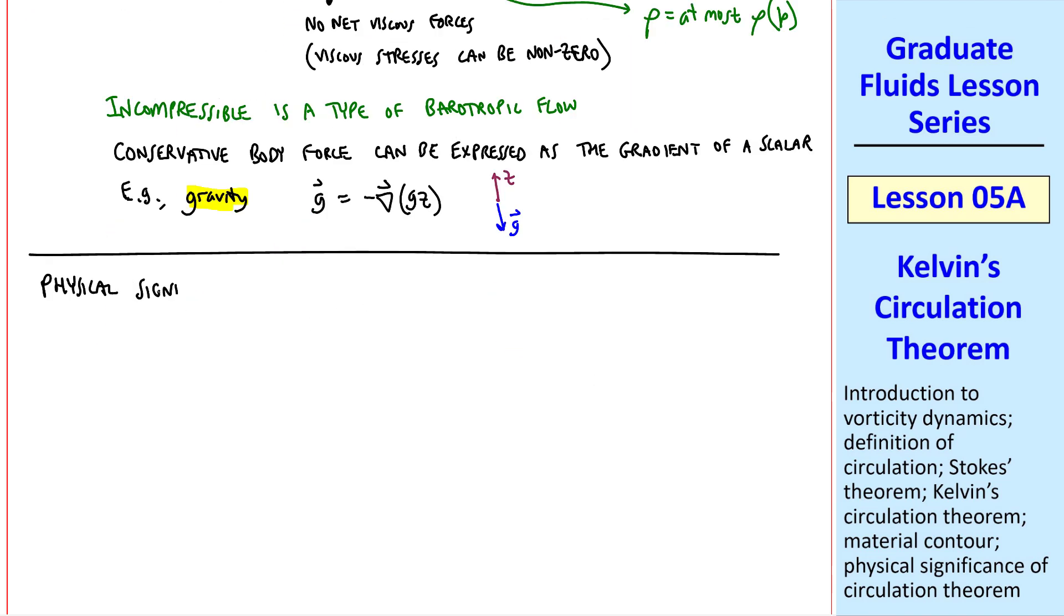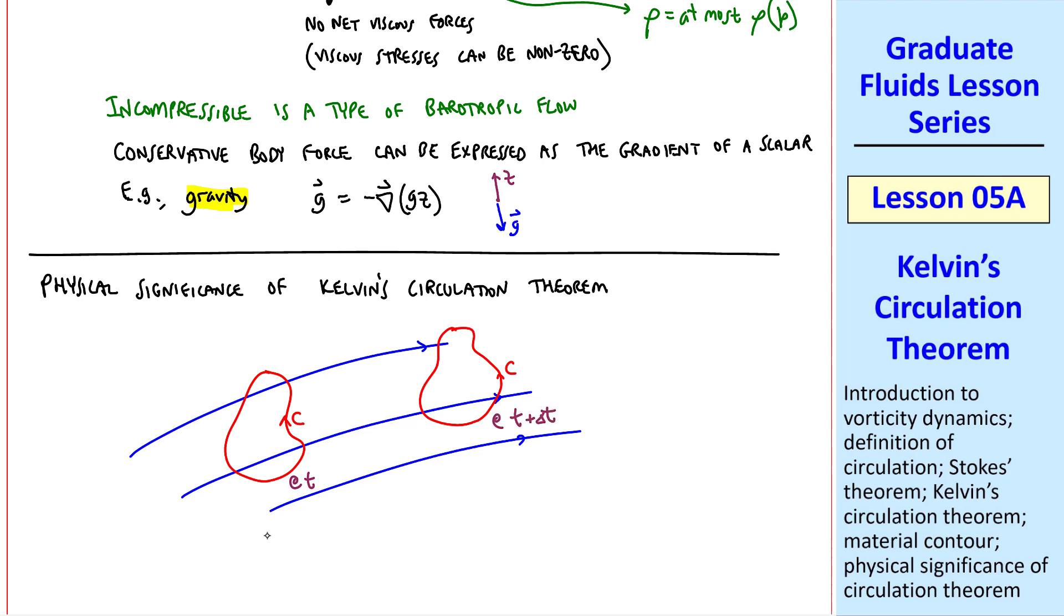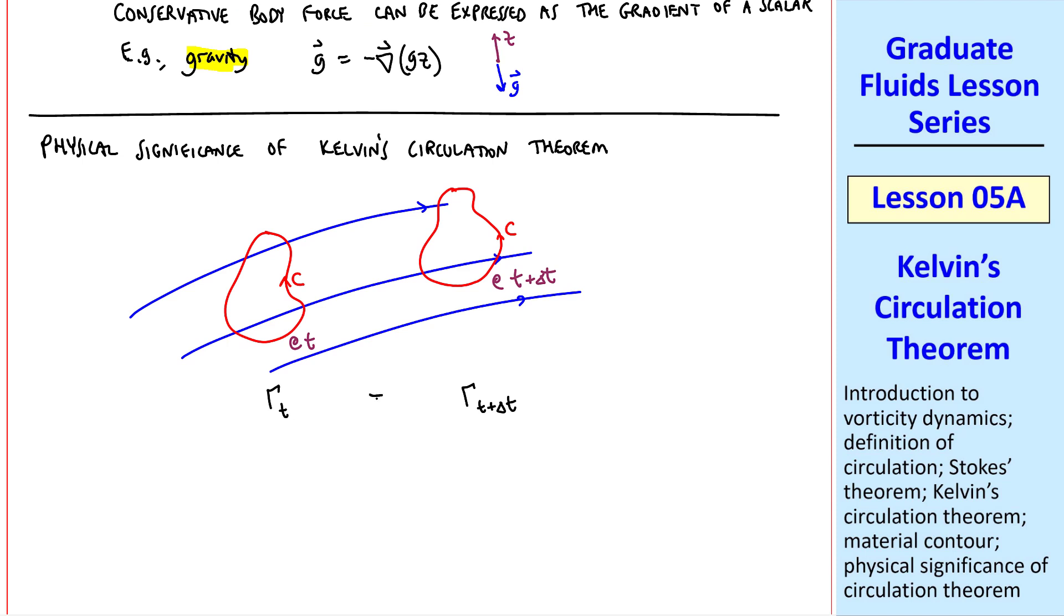Now let's talk about the physical significance of Kelvin's circulation theorem. If these are our flow field streamlines, and we have some contour C, which is our material contour at time t, this contour is a material contour that moves with the flow, and it can distort. So the contour will be some other place at t plus delta t some later time. If we calculate gamma at t and gamma at t plus delta t, Kelvin says that these two have to be equal. In other words, the circulation is constant as we move along, as long as we don't encounter any significant viscous forces. In other words, we must meet the criteria for Kelvin's circulation theorem to apply. This is the general case for a rotational flow.